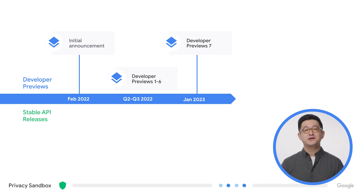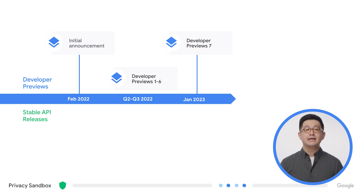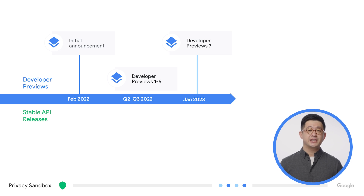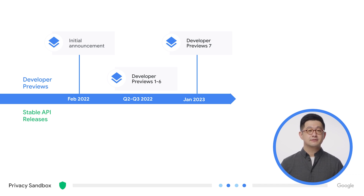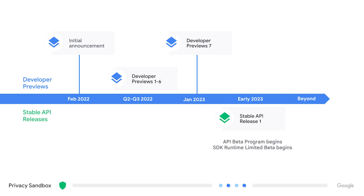Since our initial announcement in February 2022, we have been busy releasing developer previews of the Privacy Sandbox, which allows you to integrate and test all of the initiatives I just mentioned. Right now, you can check out what's new in developer preview 7, which was released within the last couple of weeks. We're excited to announce our plan to enable testing of the Privacy Sandbox on public mobile devices in early 2023, as we launch our first stable API release for you to integrate. This is when our API beta testing will begin for ad-tech developers, as well as a small limited beta for the SDK runtime.